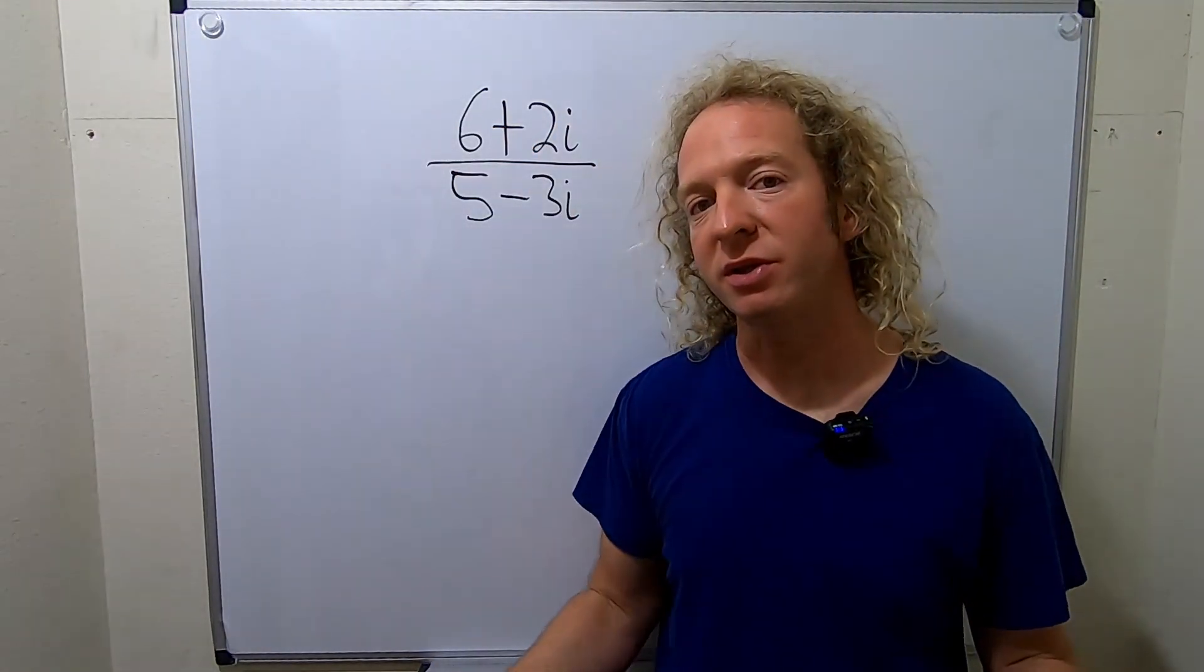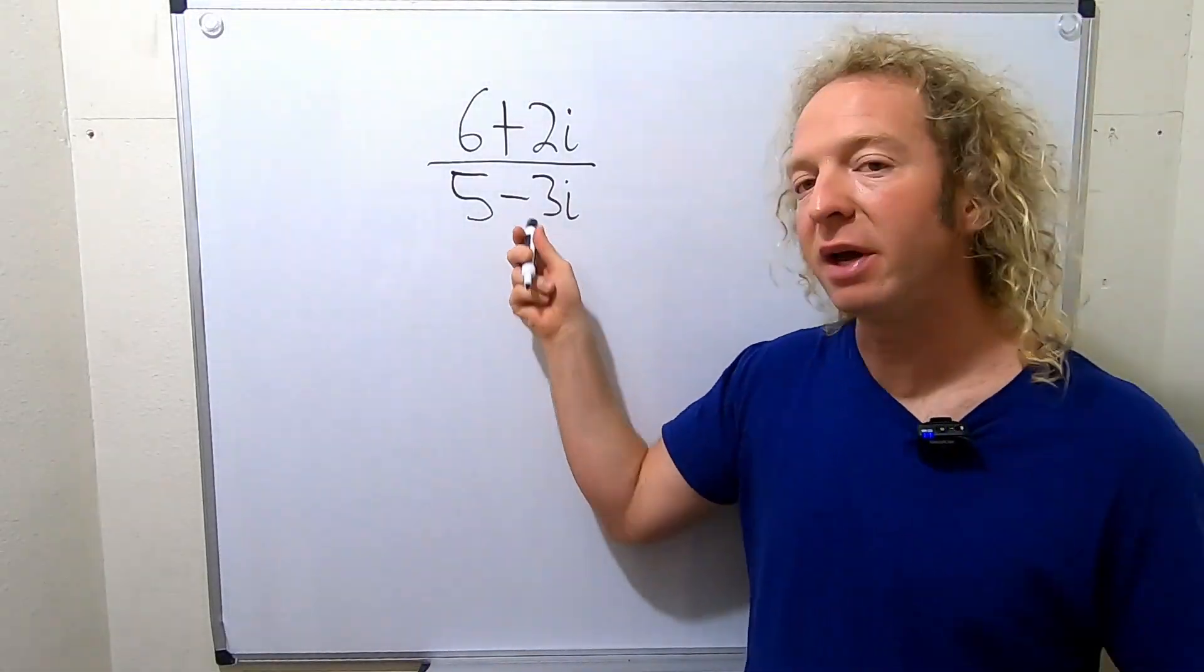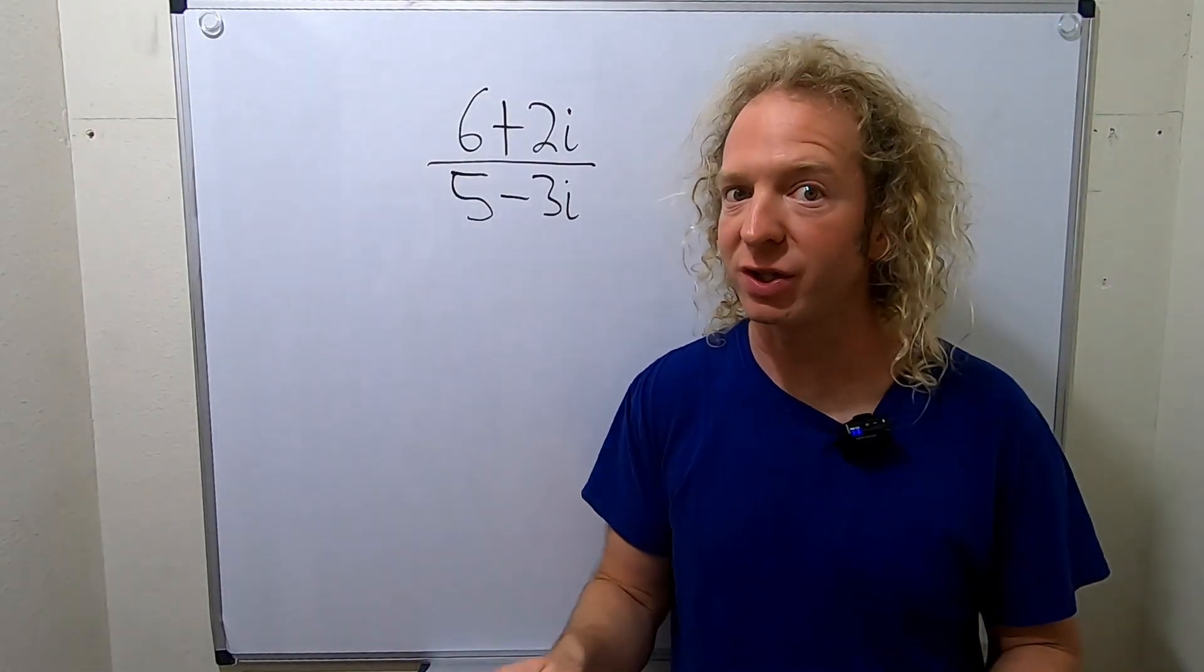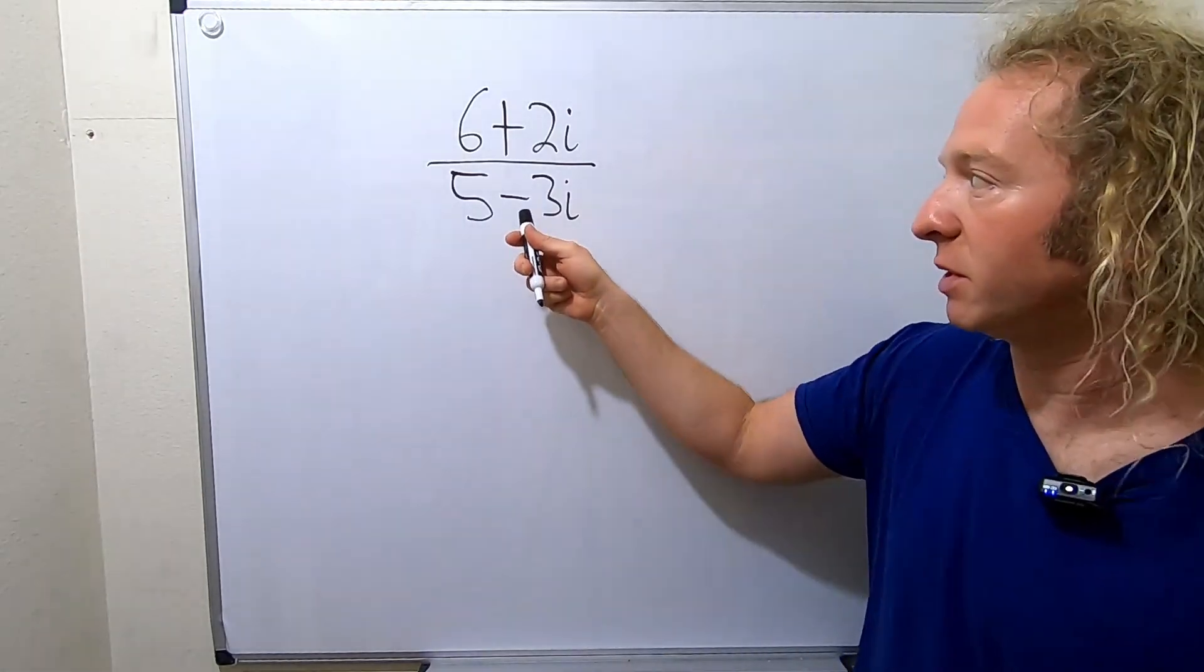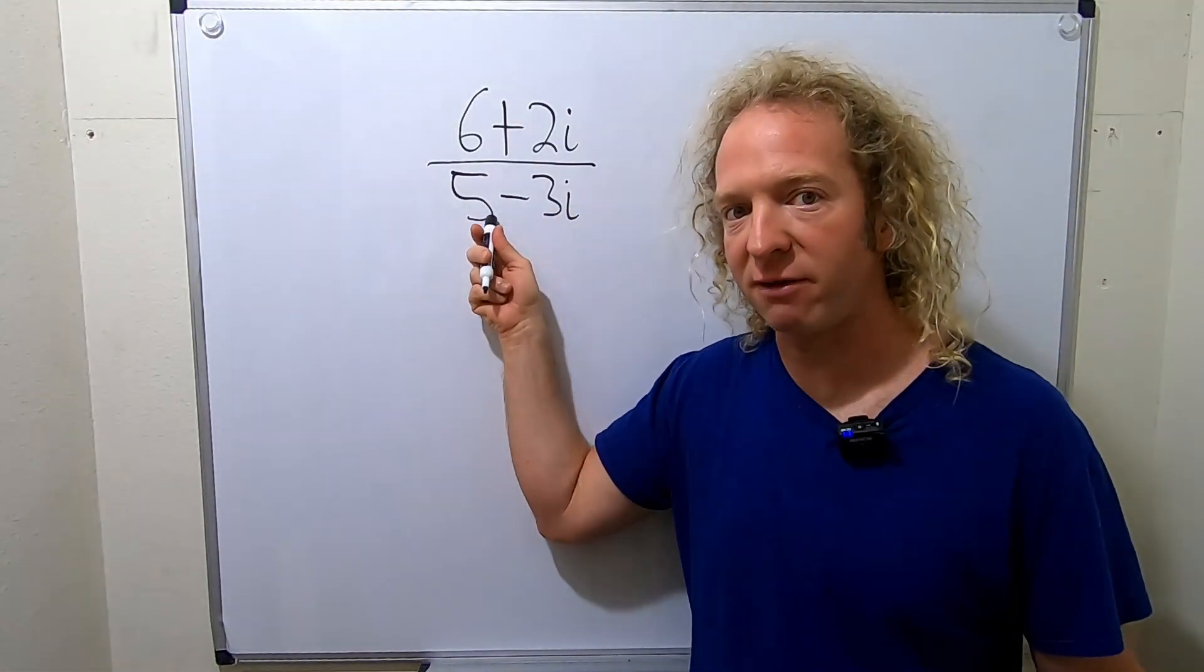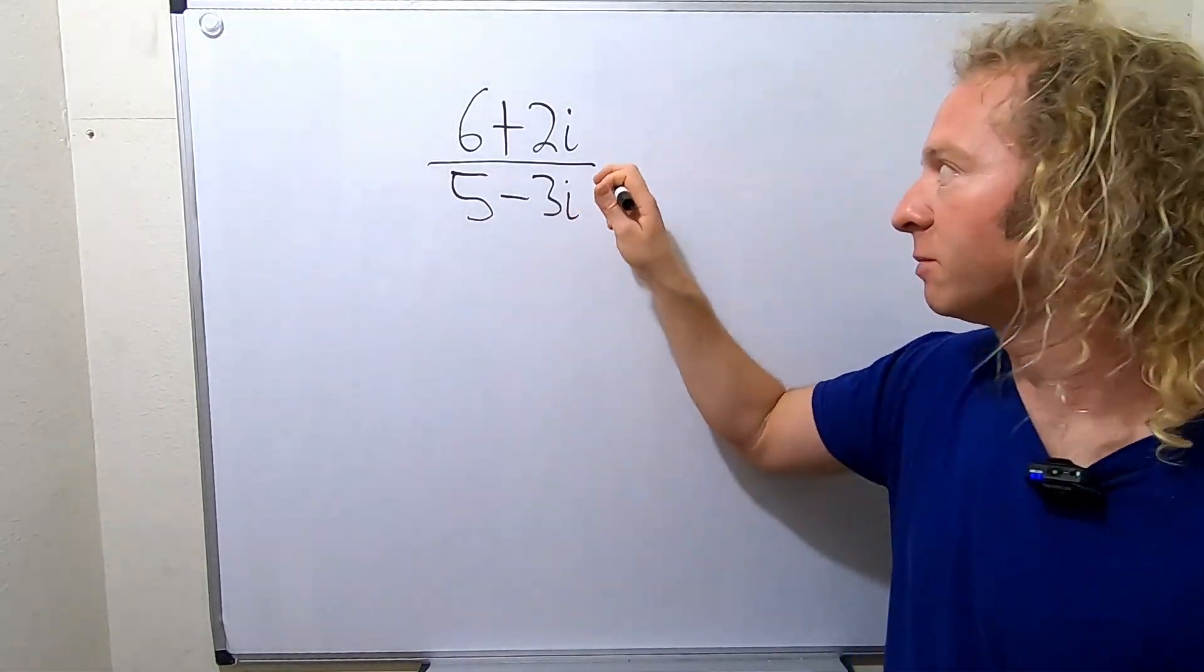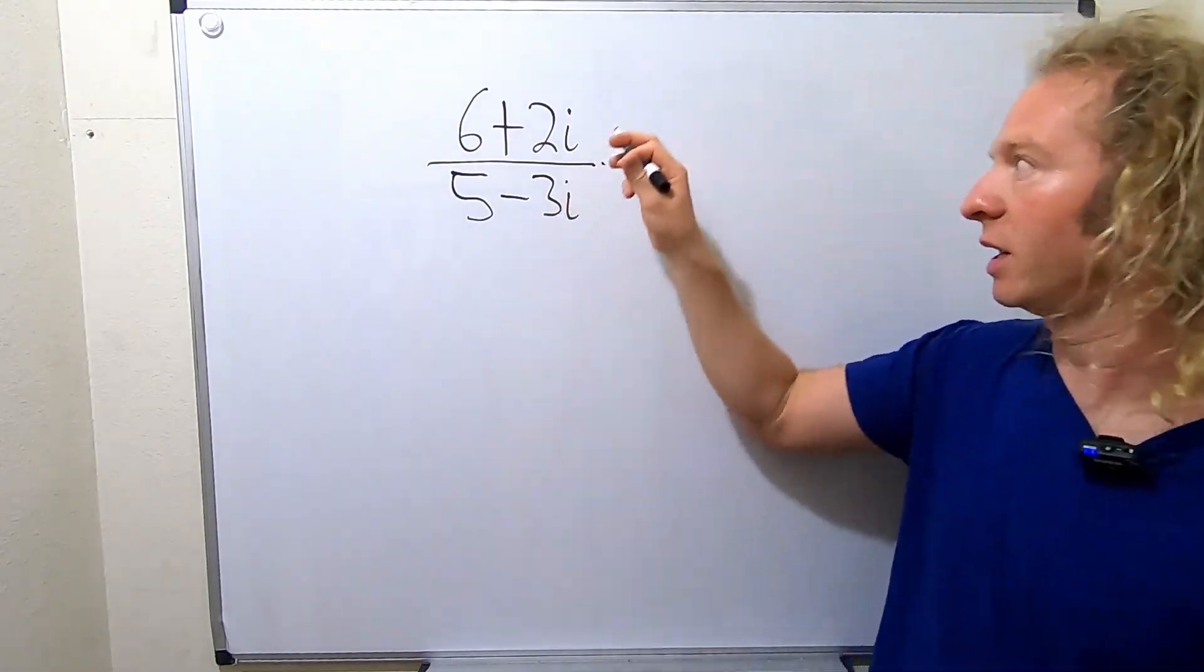So the way to do this is to always look at the bottom piece and multiply by the conjugate in a clever way. Because the bottom piece is 5 minus 3i, we have to multiply by 5 plus 3i like this.